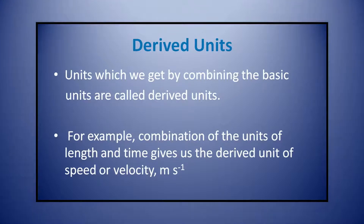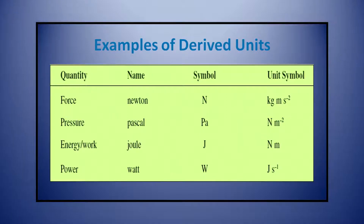Now we will discuss derived units. We have already studied the SI units of base quantities, but for other physical quantities we have to derive the units by using the base units. Units which we get by combining the basic units are called derived units. For example, the combination of the units of length and time gives us the derived unit of speed or velocity. The unit of velocity is meter per second, since the formula for speed is displacement divided by time — displacement is length (meter) and time is second.